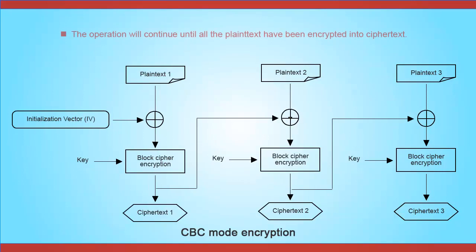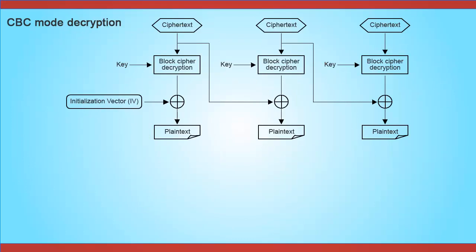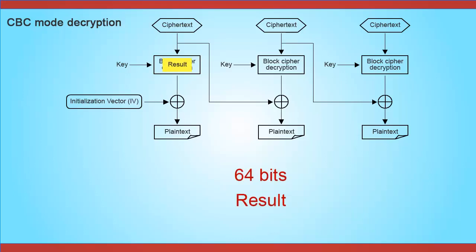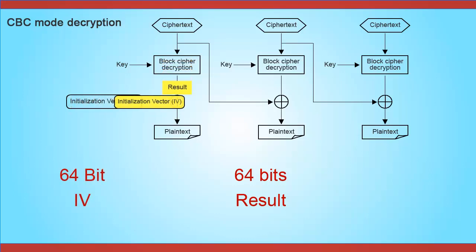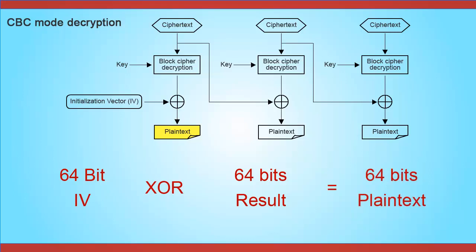The second ciphertext is used as the initialization vector for the next operation to produce the third ciphertext. The operation continues until all the plaintext has been encrypted into ciphertext. In CBC mode decryption, the ciphertext is sent to the block cipher decryption to produce a 64-bit result. The result and the 64-bit initialization vector go through an exclusive OR operation to produce the 64-bit plaintext. Therefore, the initialization vector must be known to both the sender and receiver.